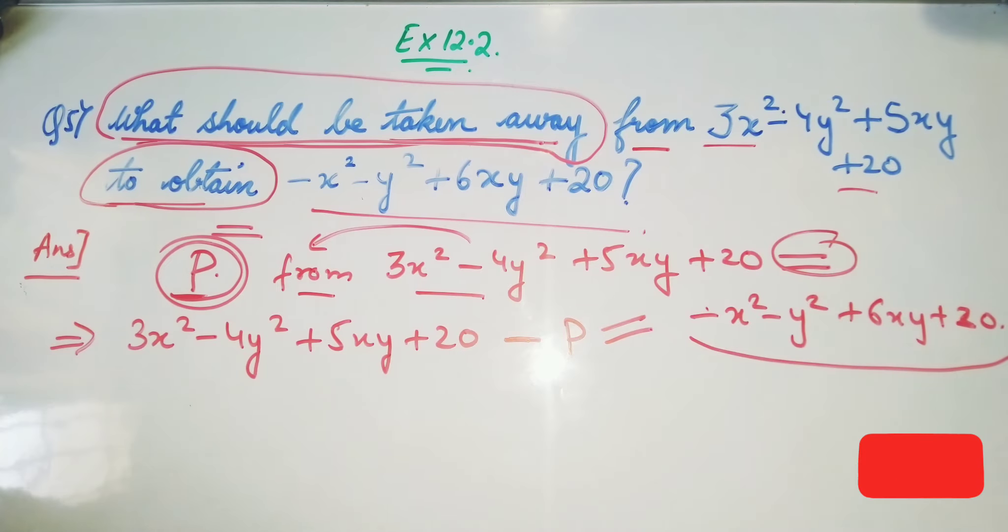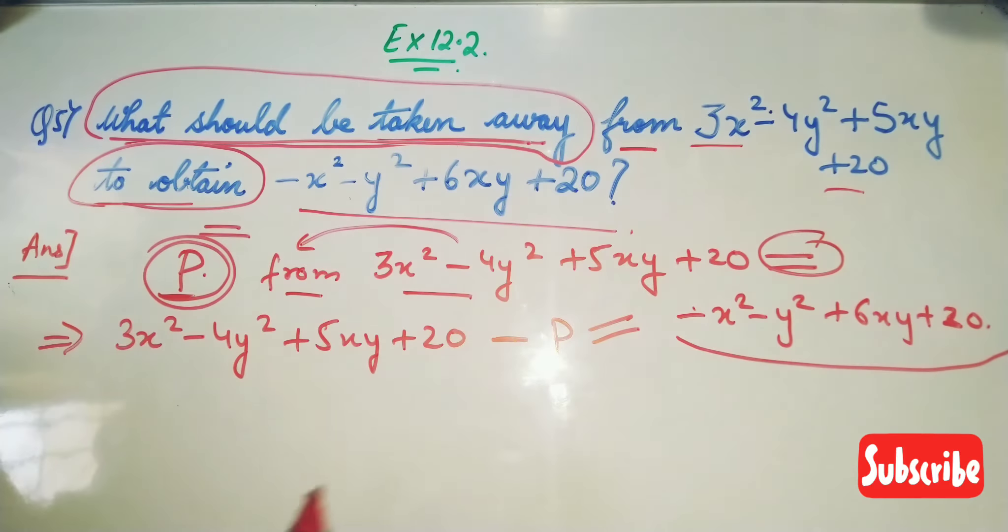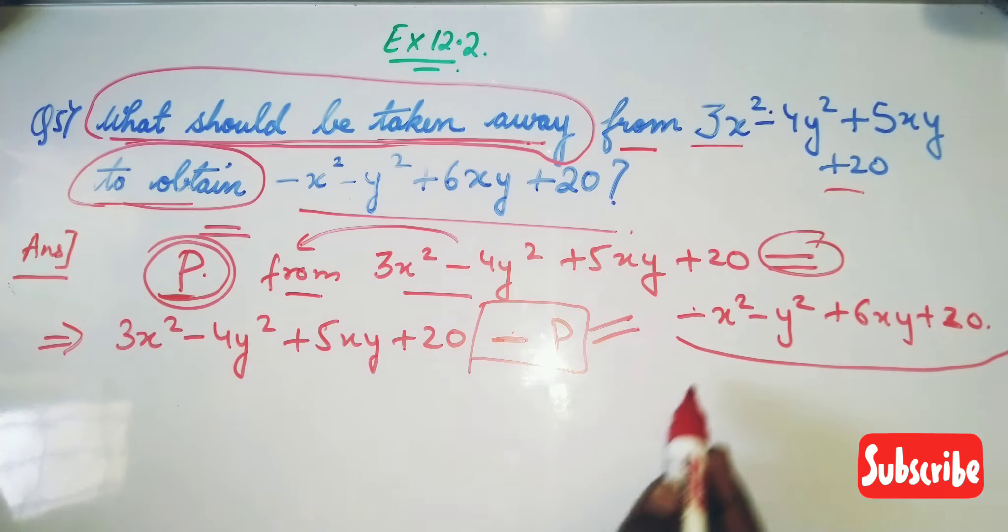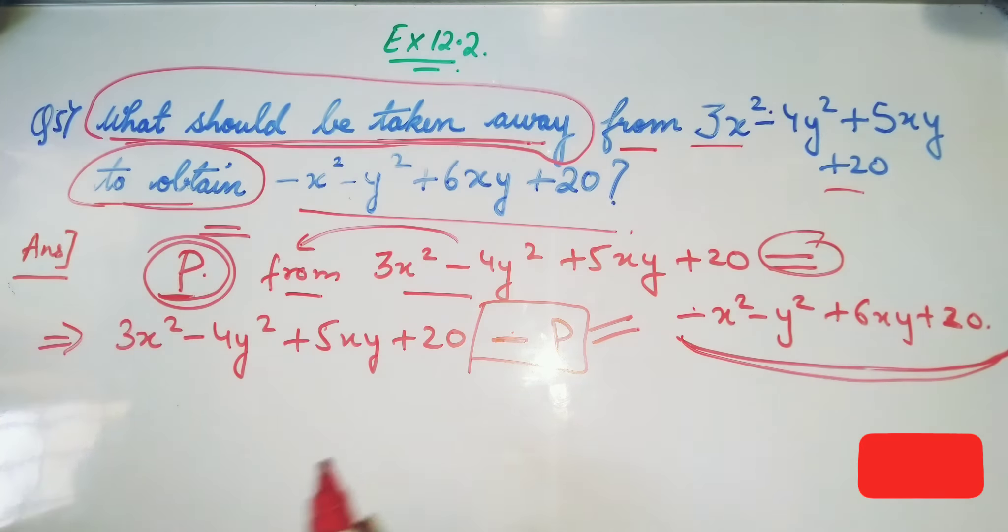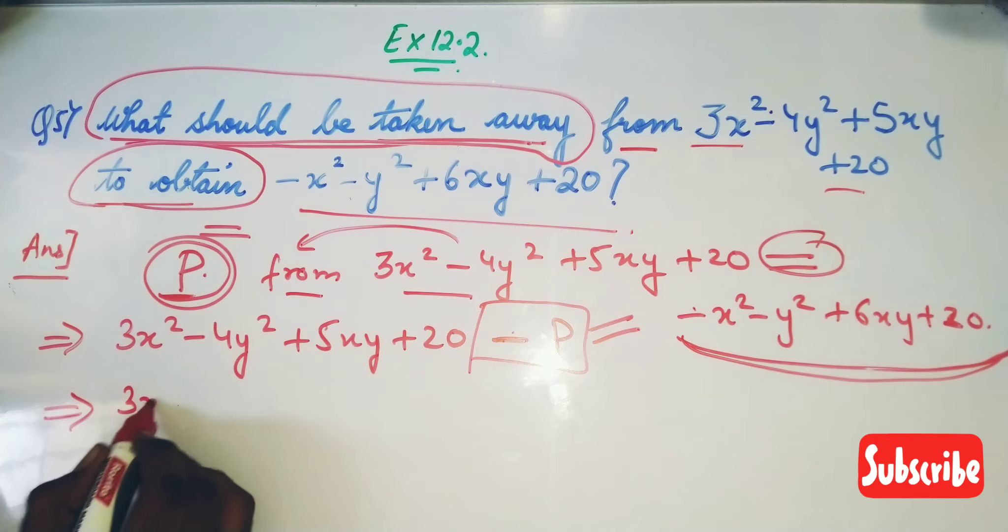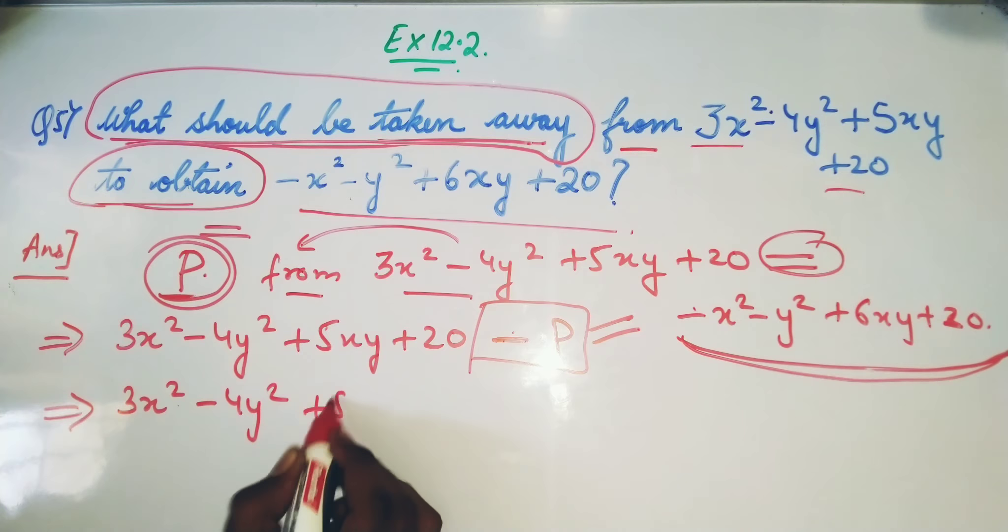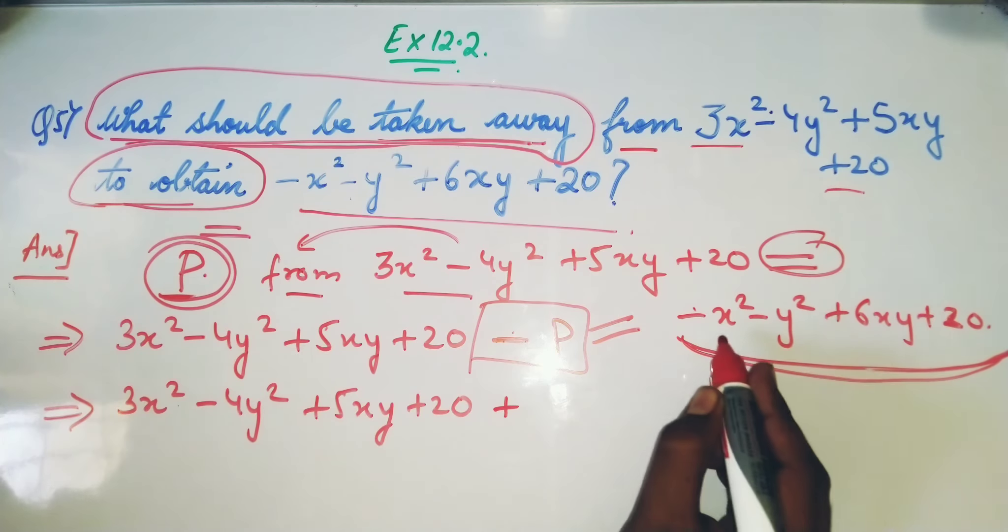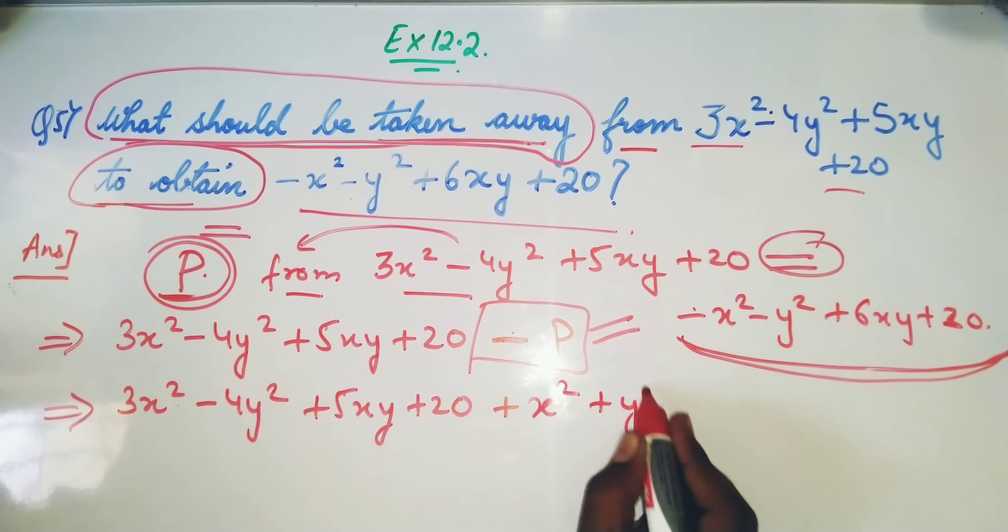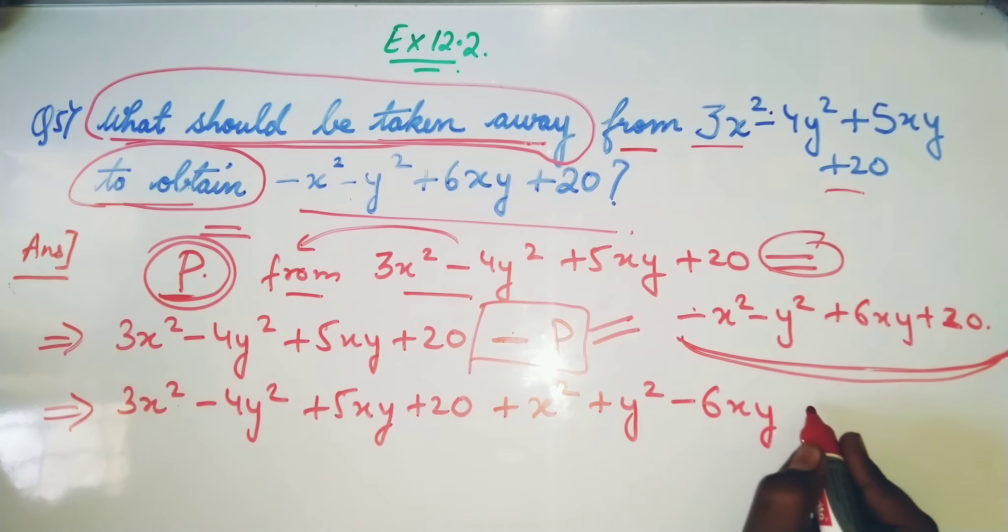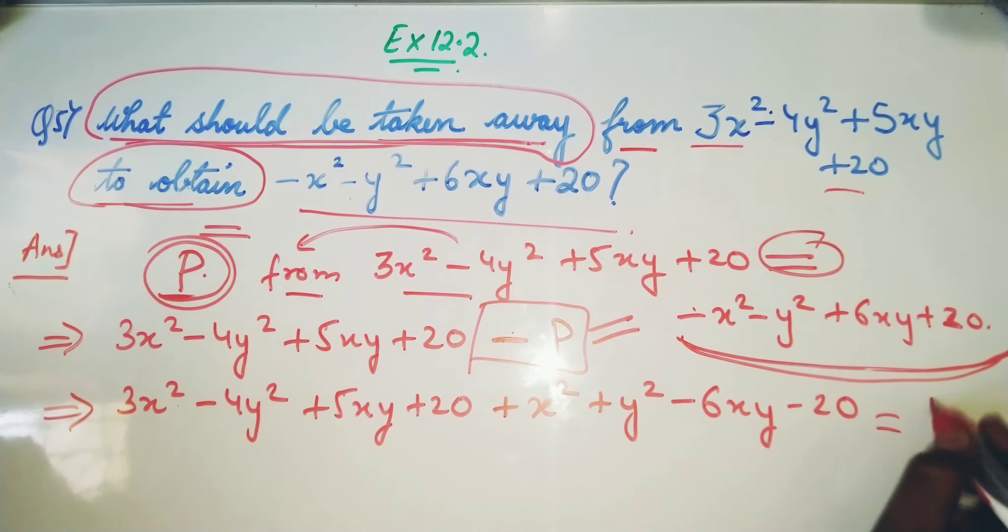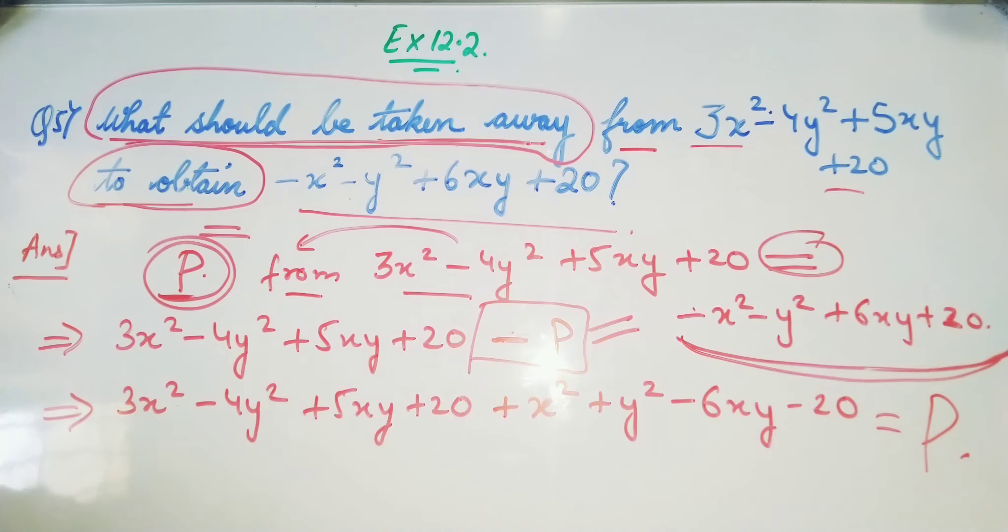Now what we have to find? We have to find P. So P has negative sign, so you take this P to the RHS and bring this whole term to the LHS. So 3x² - 4y² + 5xy + 20, bring all this term to this side, so it becomes -x² - y² + 6xy + 20. Equal to what? P.